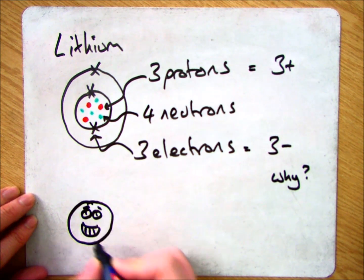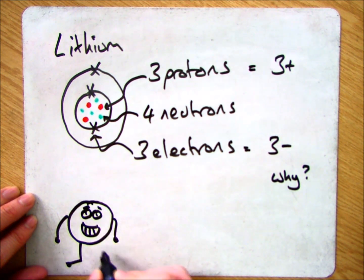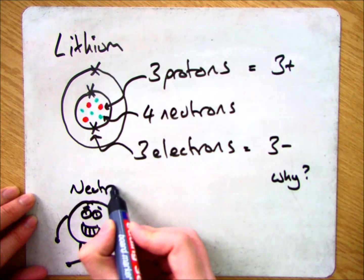And the main thing to realize is by having three protons, which are three positives, and three electrons, which are three negatives, it makes the overall atom neutral.